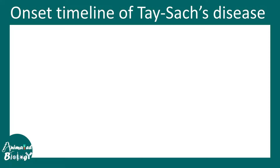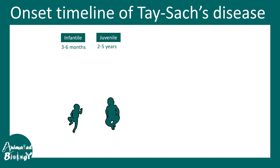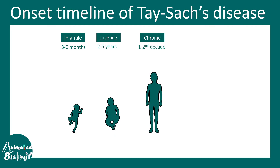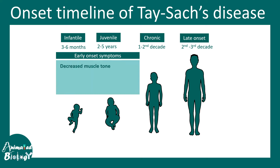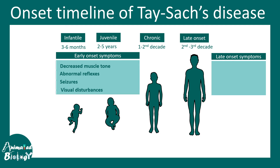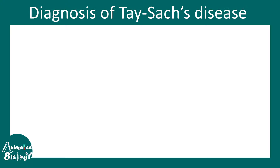Tay-Sachs disease has multiple onset timelines: infantile onset at 3–6 months, juvenile onset at 2–5 years, chronic onset in the first or second decade, and late onset in the second or third decade. Early onset symptoms include decreased muscle tone, abnormal reflexes, seizures, and visual disturbances. Late onset symptoms include motor defects and bipolar-type disorders.